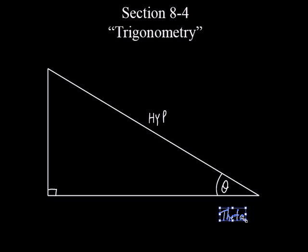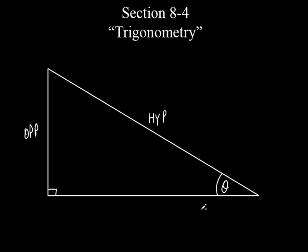We're going to start off understanding that when we have a missing angle, a lot of times we'll call it theta. If I'm dealing with this angle right here, I'm going to call the sides something in relationship to this angle. This side right here is located opposite angle theta. So I'm going to call this the opposite side — OPP for opposite.